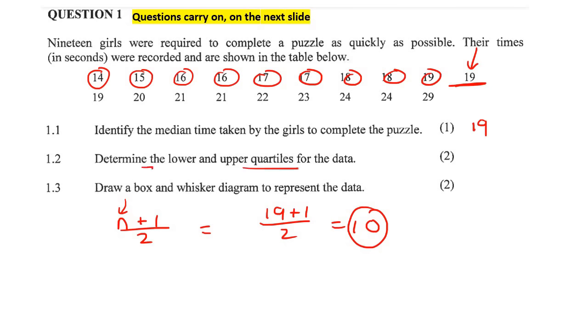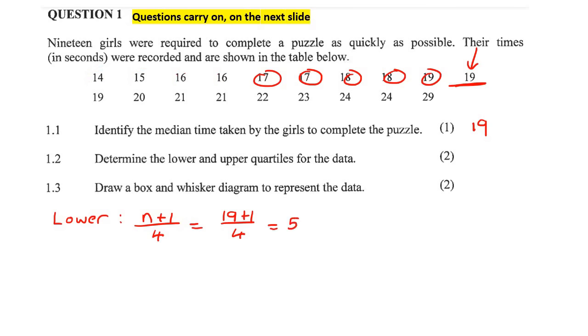Now the next one is lower and upper quartiles. So here we can just use the formula. So we can say, for lower quartile, n plus 1 over 4. So that's going to be 19 plus 1 over 4, which is going to give us 20 divided by 4, which is 5. So we go to position 5: 1, 2, 3, 4, and there it is. So that would be 17 as your lower quartile.